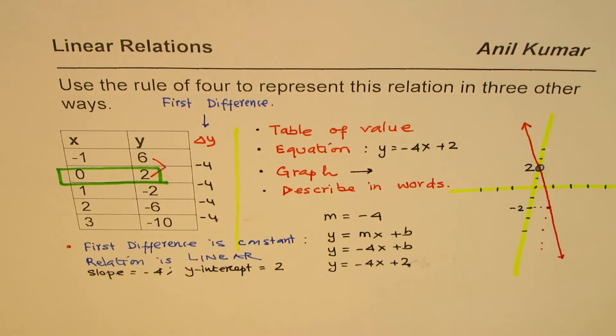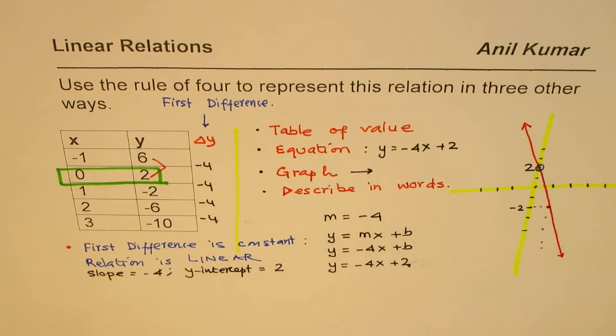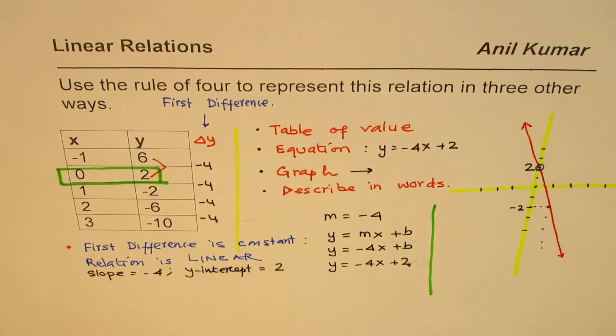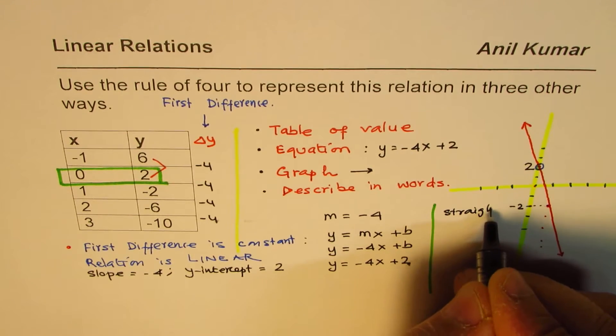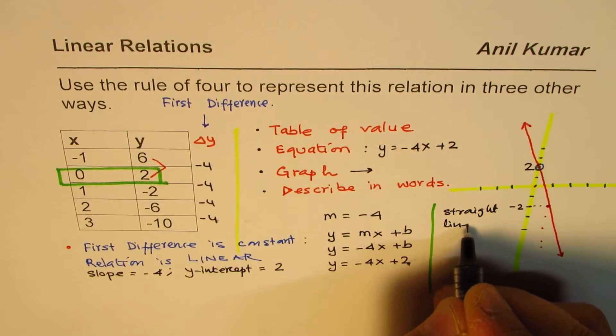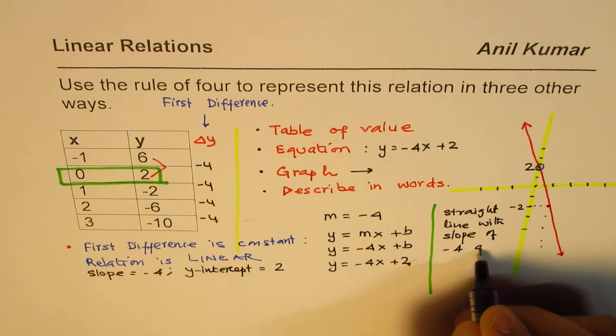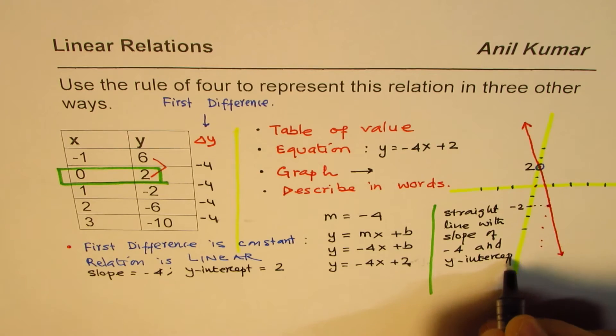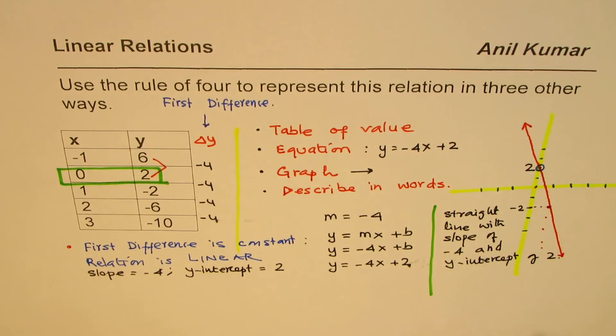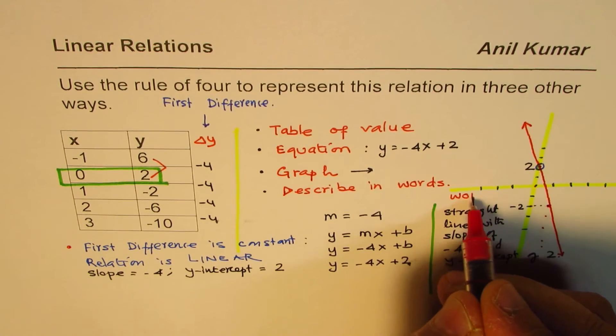Describing in words, we can say that the table represents, let me write down here, table represents a line, a straight line, with slope of negative 4 and y-intercept of 2. So, that is the description in words. So, that is how we could describe this line in words.